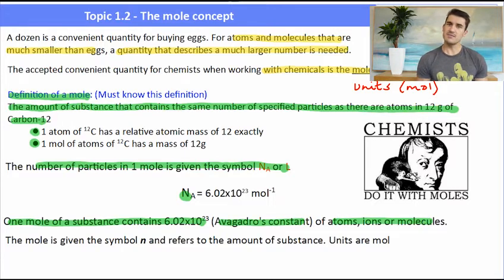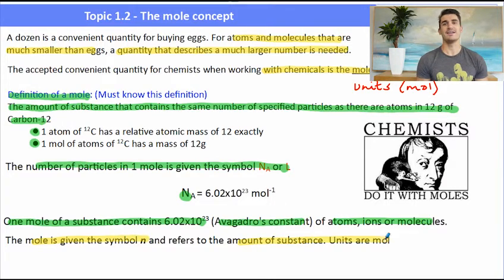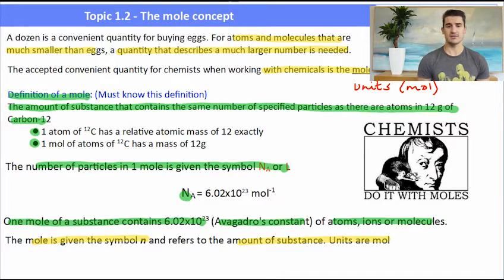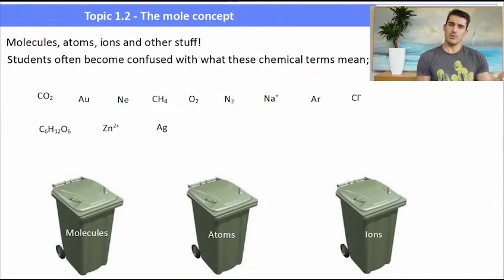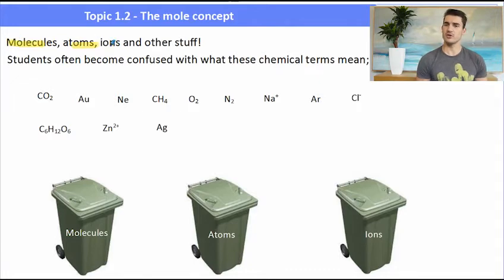The amount in mole is given the symbol little n, and its units are mole. So we have two quantities: big N and little n. When we talk about the number of moles of things, we might talk about the number of moles of molecules, atoms, or ions.